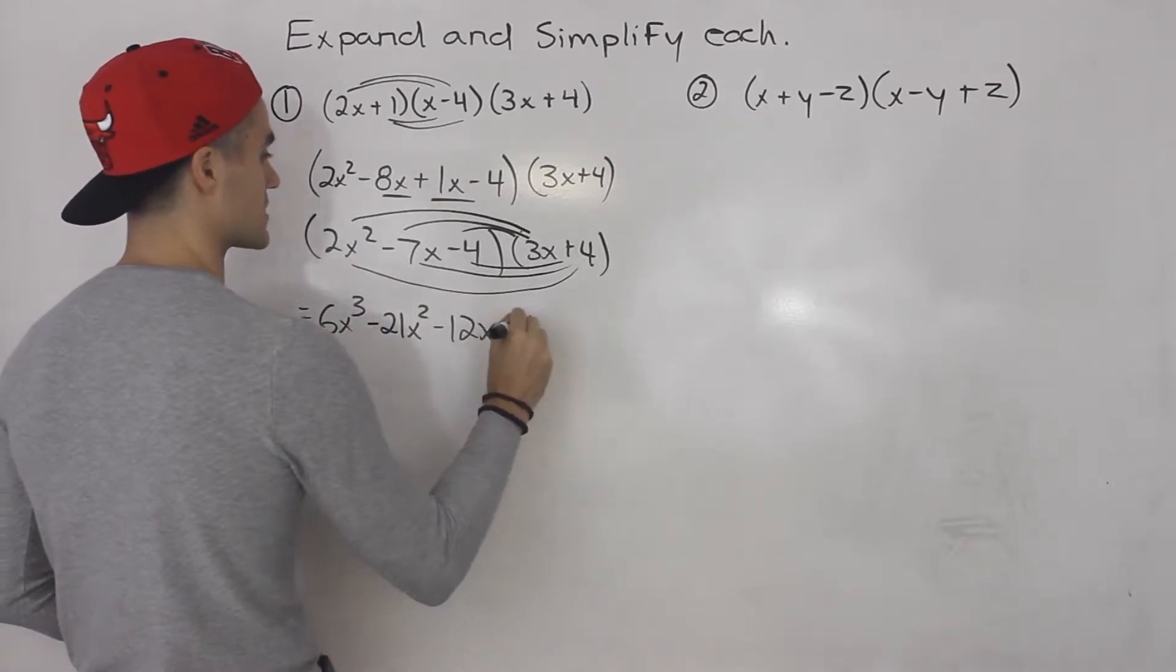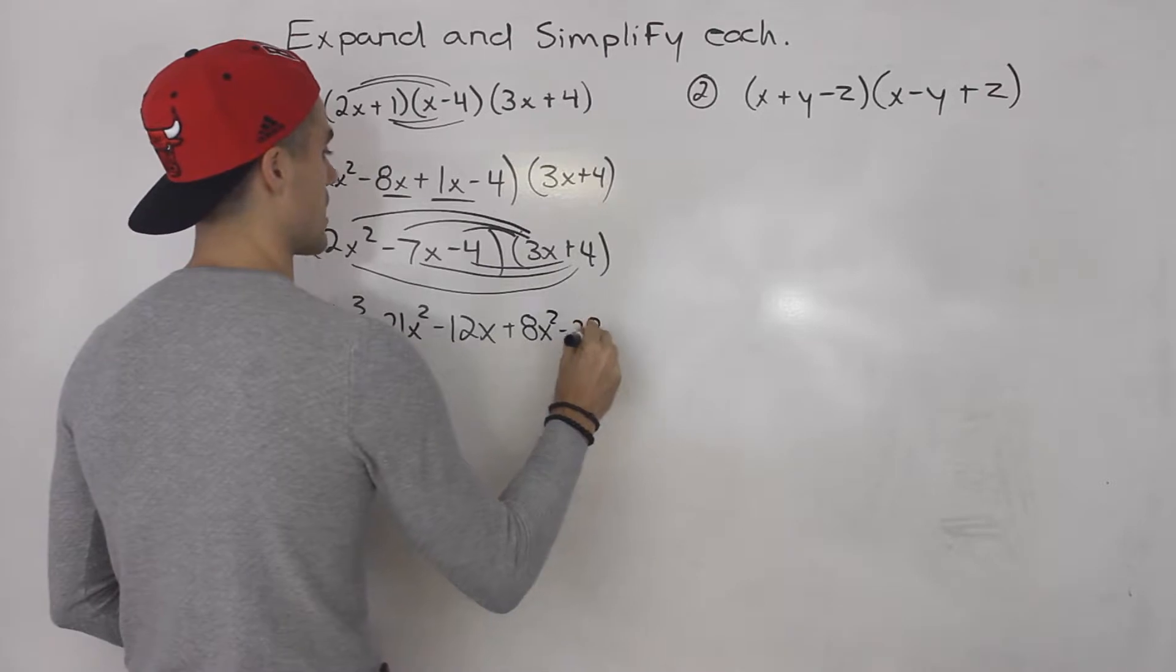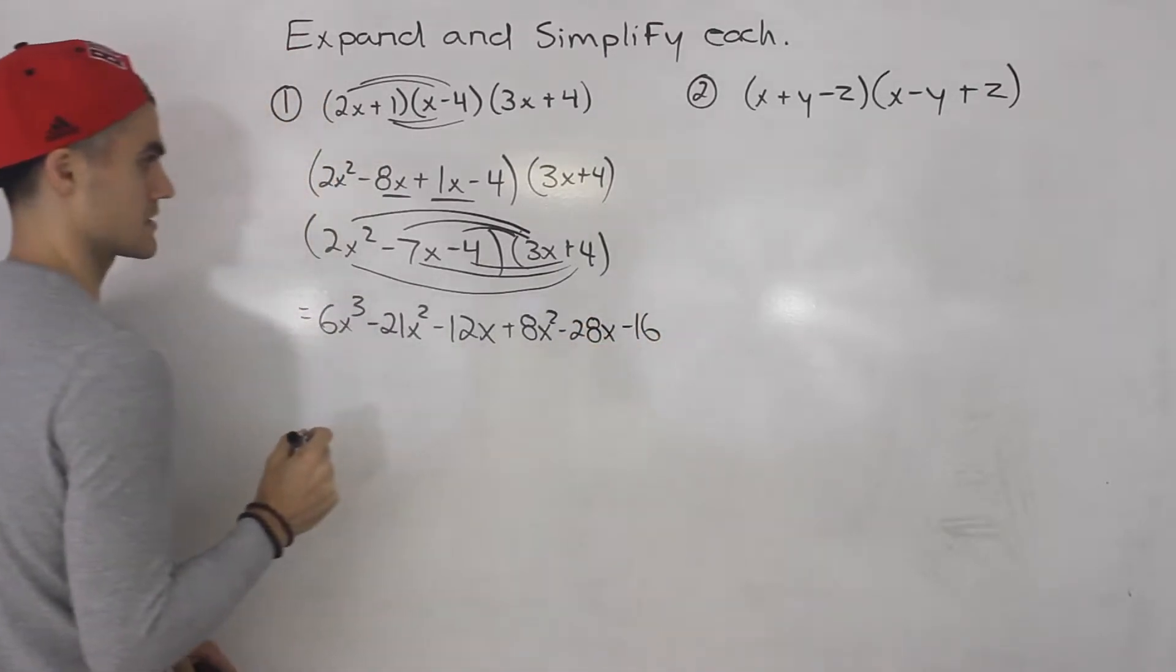So 4 times 2x squared would give us 8x squared. And we'd have minus 28x minus 60.